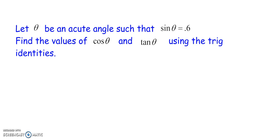Okay, so we see, we've got this problem here. It says, let theta be an acute angle such that sine theta is equal to 0.6. Find the values of cosine theta and tangent theta using the trig identities. So, to do this using the trig identities, we know that sine squared theta plus cosine squared theta is equal to one.